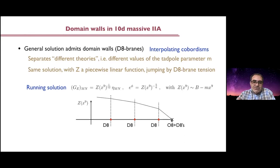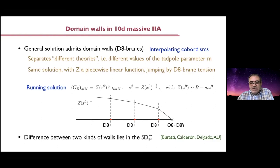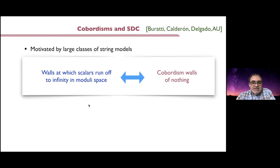Until you hit a real singularity where the resolution is actually the end of the world — this is a more refined way of bringing up the Polchinski-Witten story to the present setup. Now there is an interesting question: what is the difference between cobordism walls of nothing and interpolating walls that separate one theory from another or the same theory with different parameters? The interesting feature is that the difference between the two kinds of walls lies in the behavior of the different fields, and in particular has to do with the swampland distance conjecture.